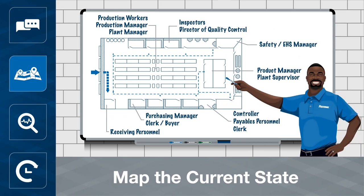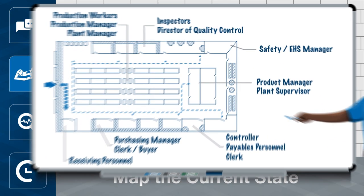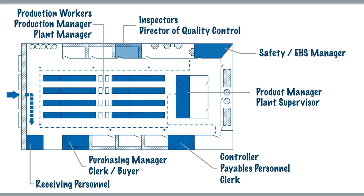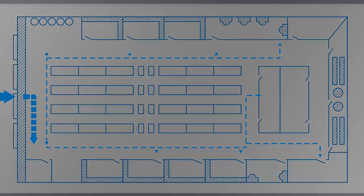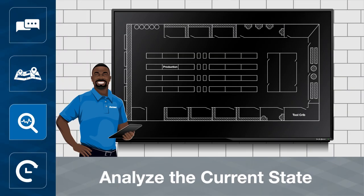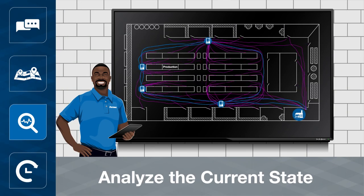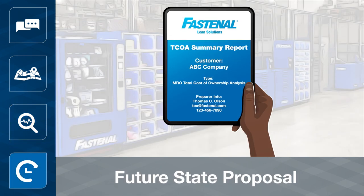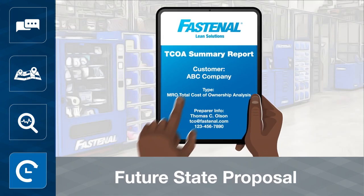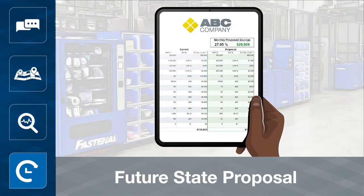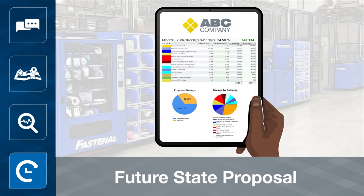It takes four to eight hours to map the current state. This includes meeting with relevant departments to understand all aspects of your supply processes. Next, we analyze the current state, looking for opportunities to reduce non-value-added steps and costs. The takeaway is a detailed future state proposal — a set of solutions to achieve T.C.O. savings through Fastenal's investment in your supply chain.